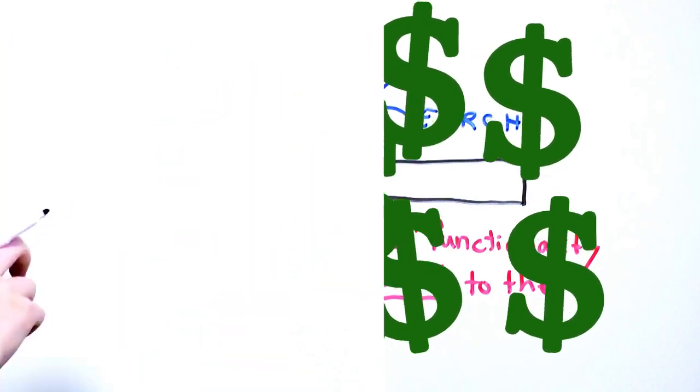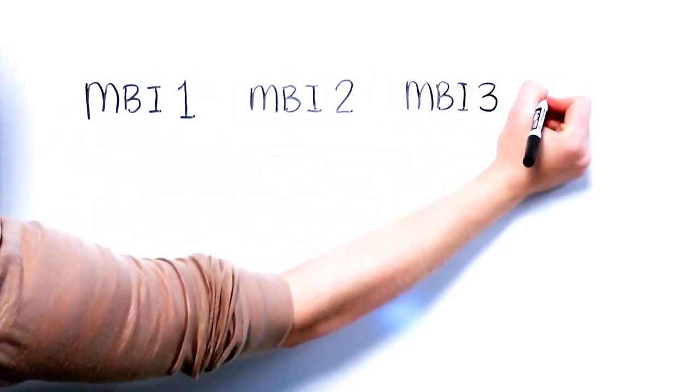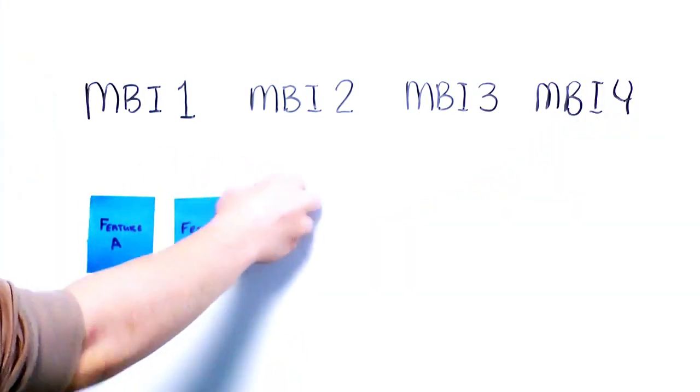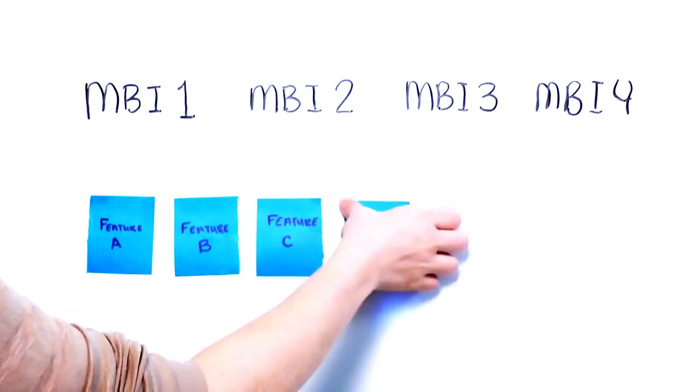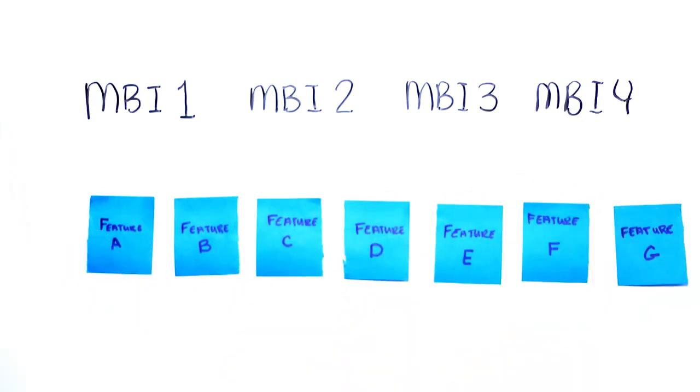Our team went back to a list of MBIs that had been developed early in the project. We eliminated the ones that had already been delivered, assigned to other teams, or descoped. We wrote the name of each remaining MBI on a whiteboard, then wrote the names of all the features that were already in the backlog on sticky notes and arranged them under the correct MBI.